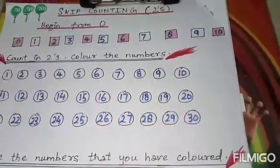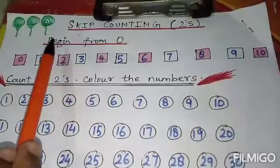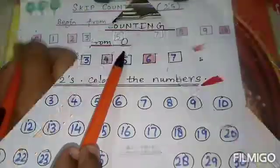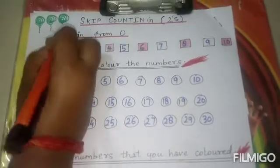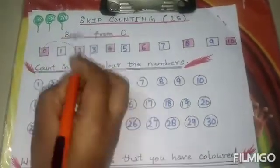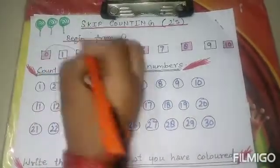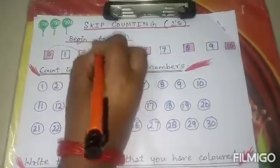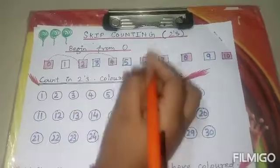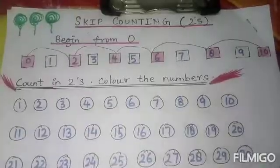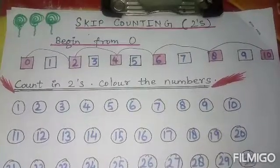Skip Counting 2s. Begin from 0. Start from 0. First ball skip, second ball jump. This is Skip Counting 2s.